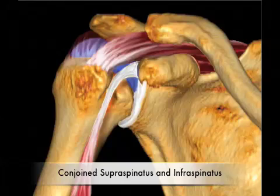The conjoined portion of the tendon makes up approximately one-third of the middle aspect of the greater tuberosity's footprint. The anterior margin is strictly supraspinatus, and the posterior margin is strictly infraspinatus. However, approximately 1.5 to 2 centimeters posterior from the anterior margin of the greater tuberosity is purely supraspinatus, while approximately 1 centimeter of the remainder of the supraspinatus tendon is actually conjoined fibers of the infraspinatus tendon as well.